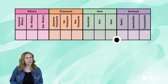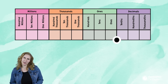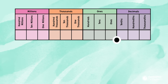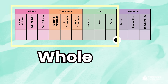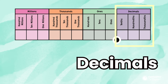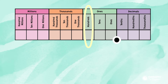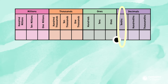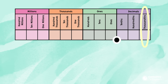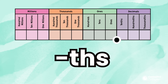A place value chart can be very helpful when looking at decimals. What do you notice about this place value chart? You might notice there's a similar pattern in the whole numbers and the decimals. There's tens, hundreds, thousands — and in the decimals it's tenths, hundredths, thousandths. Each decimal place value ends in T-H-S.